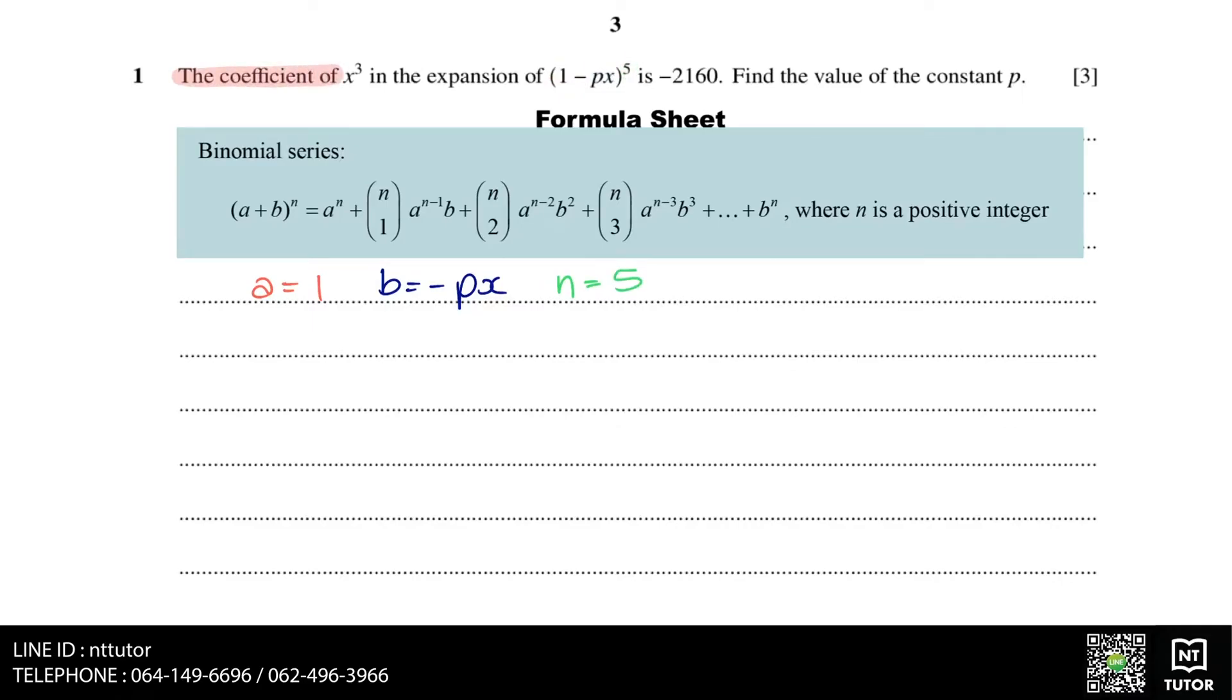We know that the coefficient of x cubed is minus 2160 and nothing else, so we only need to work with x cubed and the other terms don't matter. So x cubed happens when our b is to the power of 3, so that's when minus px is to the power of 3.